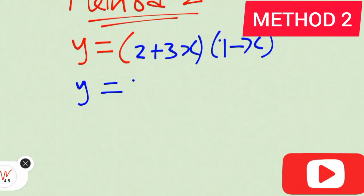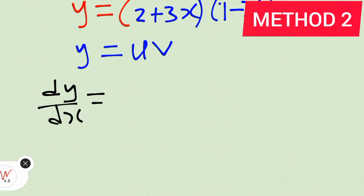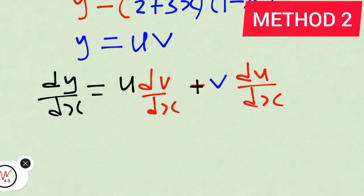Product rule states that if we have u and v multiplying each other, the rate of change of y with respect to x, if u and v are functions of x, is going to be u(dv/dx) plus v(du/dx). That's u dv plus v du.